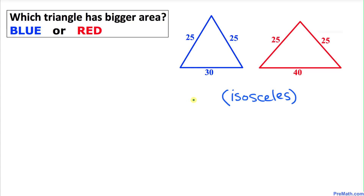Welcome to PreMath. In this video tutorial we have two triangles. These are isosceles triangles — one is blue and the other one is red. The question is which one has the larger area, either blue or red.